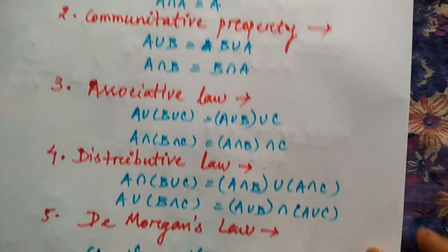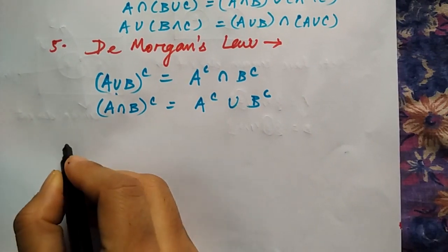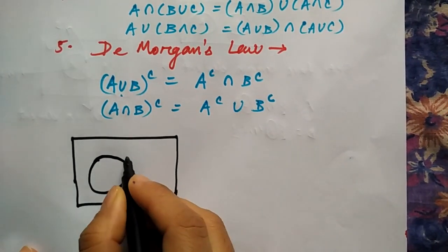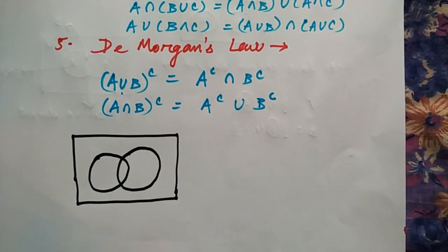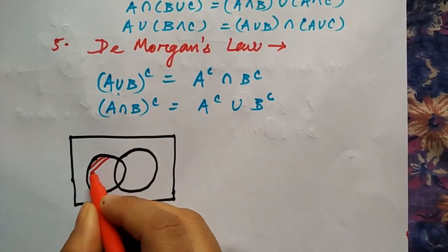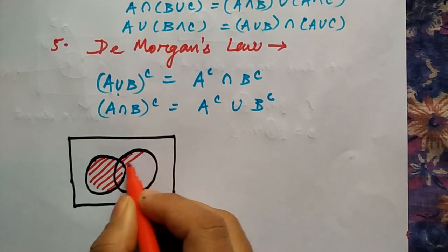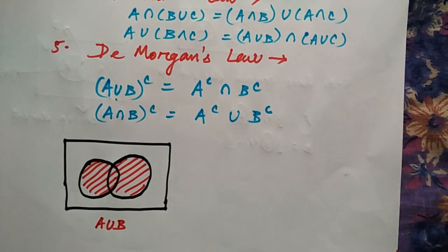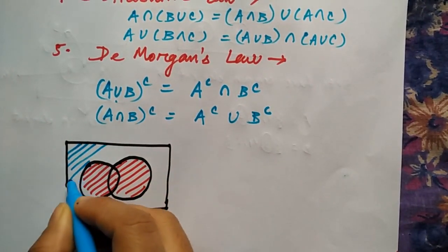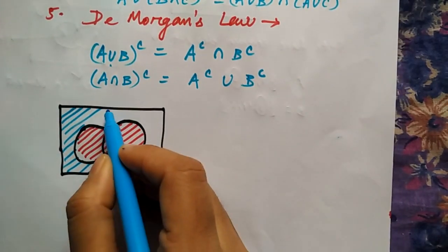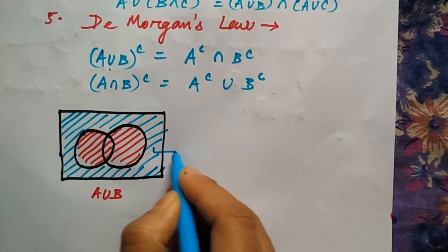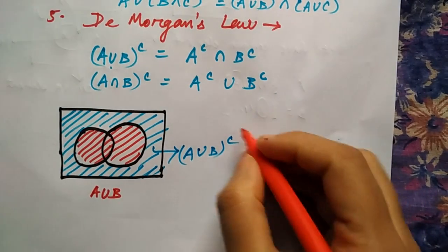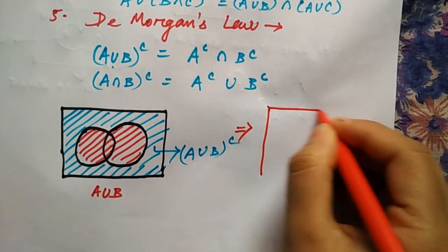We'll see the Venn diagram for De Morgan's law. This is A union B, and the complement of A union B is the part outside — the region shaded in blue — which is (A union B) complement.